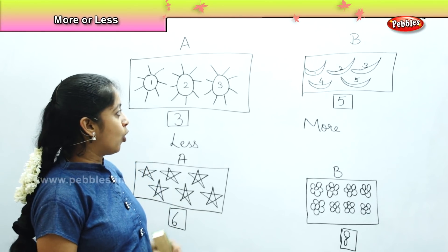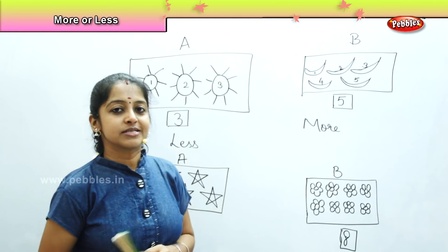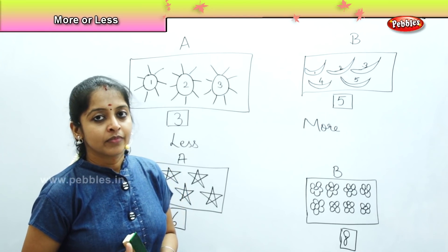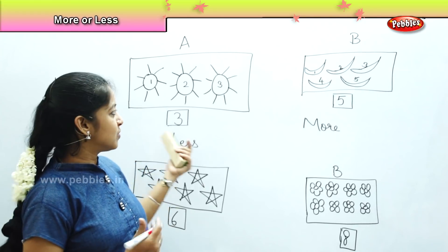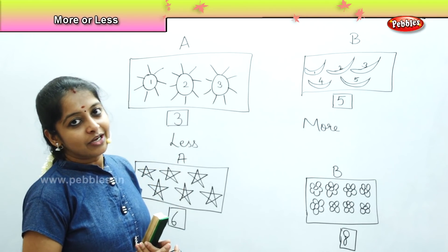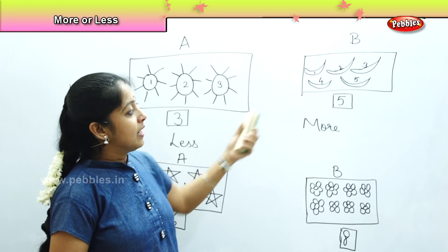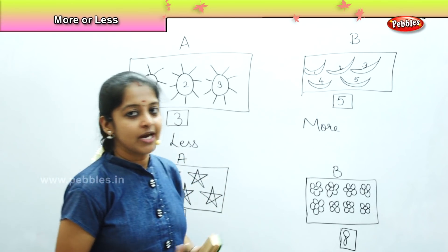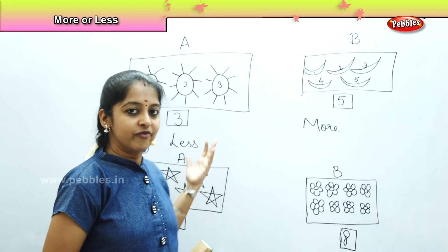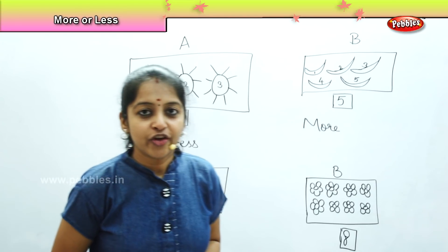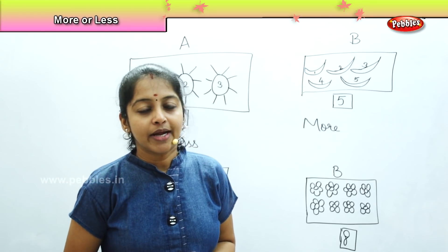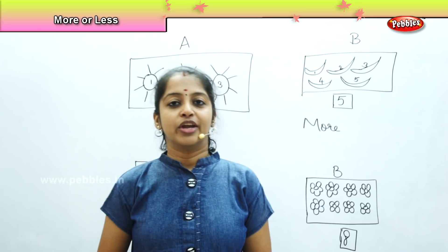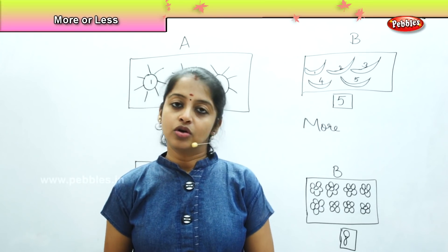So I hope this less and more concept was very interesting and very easy to learn. Was it difficult to understand? No, it was very easy. We can identify the numbers by counting how many things are present and we can differentiate which is more and which is less. Was it useful? Did you enjoy it? Yes. Now we will be going to the next new concept.